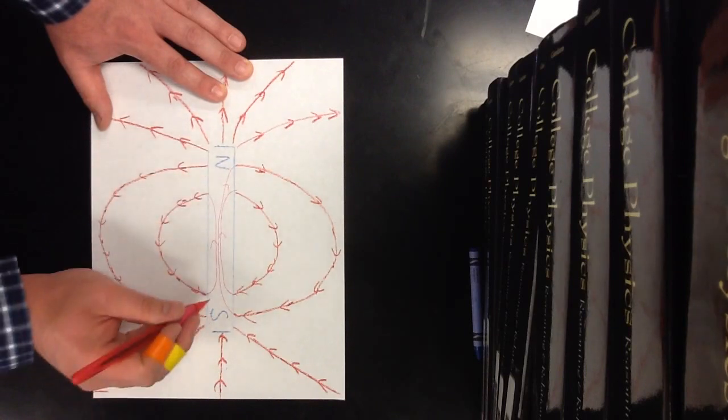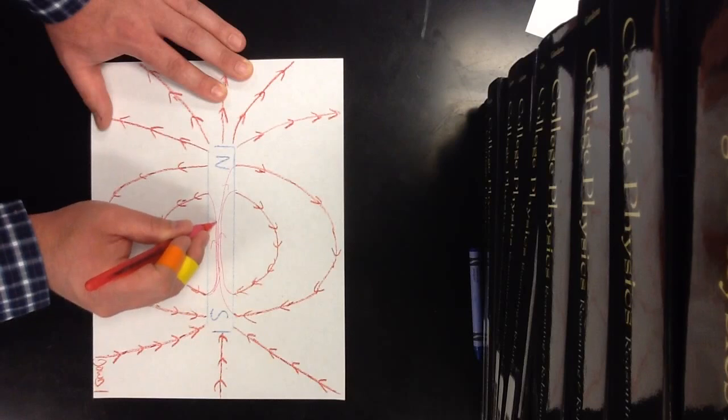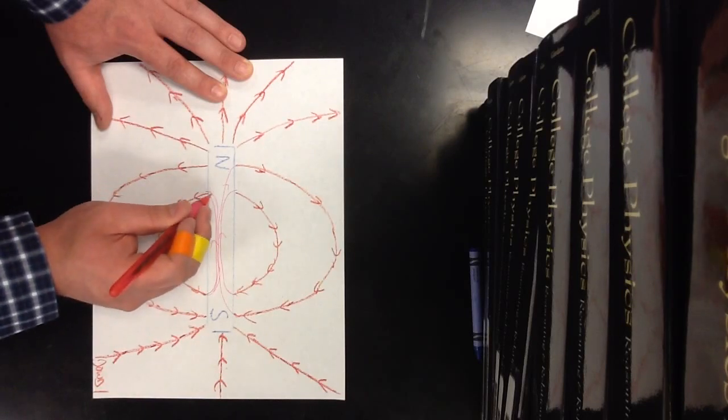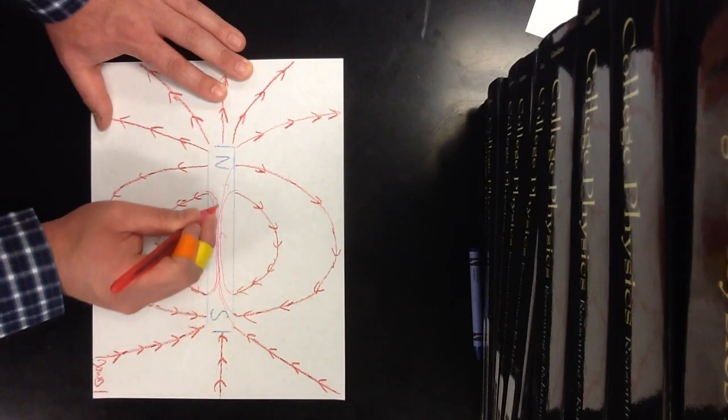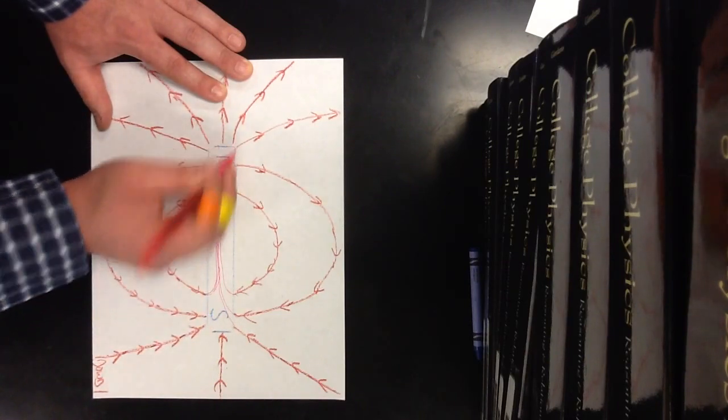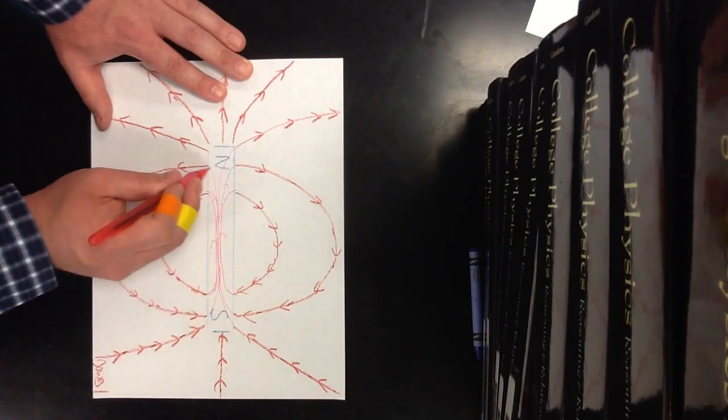We'd also see something that maybe isn't super apparent. I didn't draw that so well. These lines never cross each other. So they're very intense here in the middle of the magnet, but they're never actually crossing. Although that's hard to see.